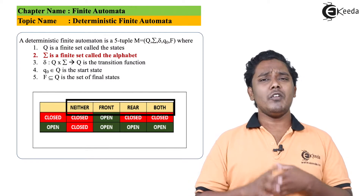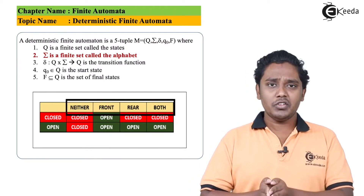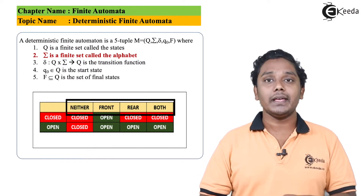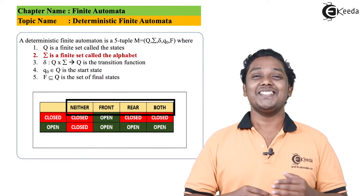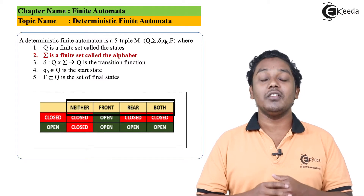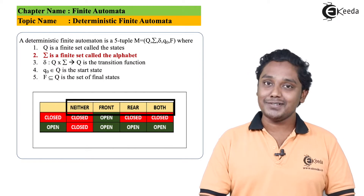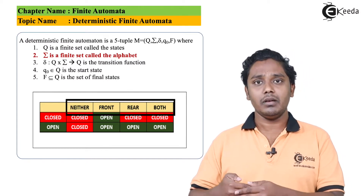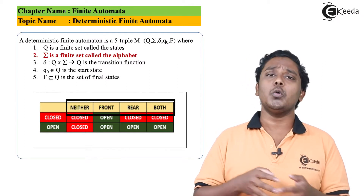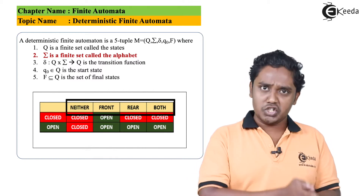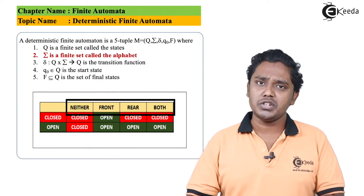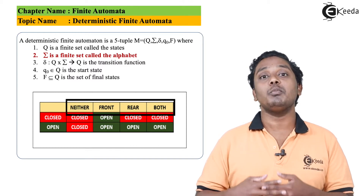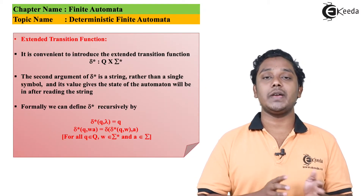The transition function δ switches from one state to another when a particular symbol is given as input. Now instead of one symbol, if an entire string is given, we apply the transition function continuously until we reach the last symbol. This continuous recursive application of the transition function is called the extended transition function. It is represented using δ* — the star means you have processed zero or more symbols. Simply stated, it processes the whole string and the final state reached is the output.